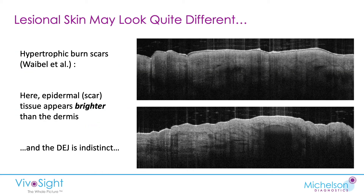Lesional skin may look quite different again. These are a couple of images of hypertrophic burn scars — I'm very grateful to Dr. Jill Weibel for these images of her patients. Here we can see that the epidermis is actually brighter in scar tissue. In the lower image, it's quite difficult to see the boundary between the epidermis and the dermis.